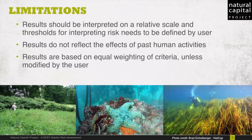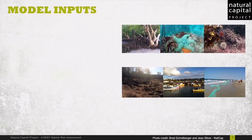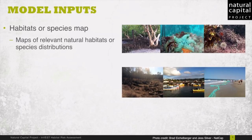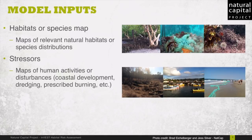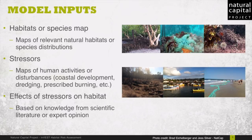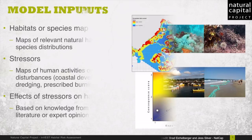Next, we'll discuss the inputs that are needed for the HRA model. First, we need maps of relevant habitat or species distributions that we are interested in assessing risk to. Next, we utilize maps of stressors that depict the spatial location of human activities or disturbances. And finally, we look at the effects of stressors on habitat, which includes information regarding exposure and consequence, and can be based on knowledge from scientific literature or expert opinion.